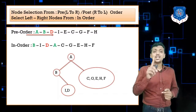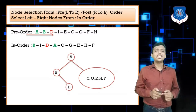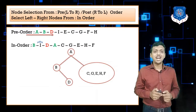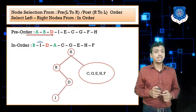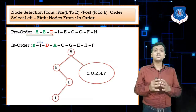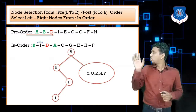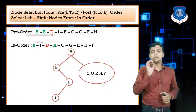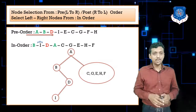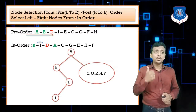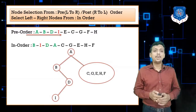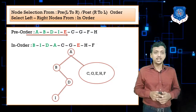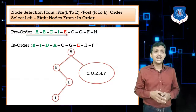Continuing in pre-order, after B we have D. From the remaining nodes I and D, we select D. On the left side of D we have I, and on the right side there is nothing. So the tree now has root A, left child B, B's right child D, and D's left child I. The left subtree of A is now complete.